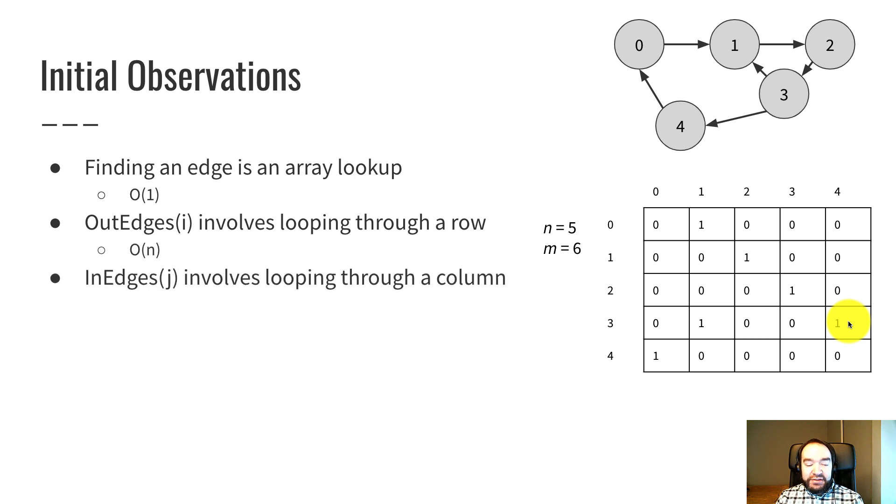And in edges of j will involve looping through a column. So if I want to know the incoming edges to four, I could go to column four and then loop through all the rows. See how there's only one true at number three? That's because the in edges of four is just the vertex number three.